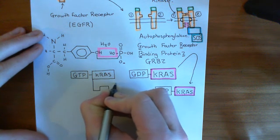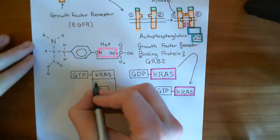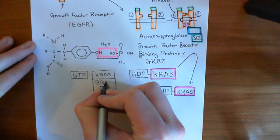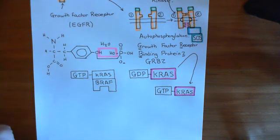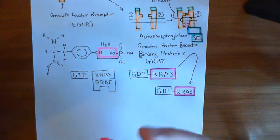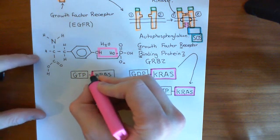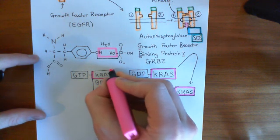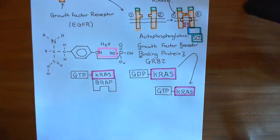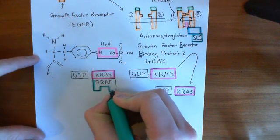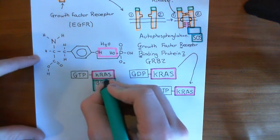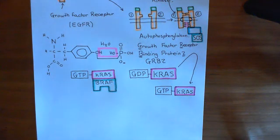BRAF is a kinase enzyme — not a tyrosine kinase, but a serine-threonine kinase. When we looked at this MAP kinase pathway in full generality, we just called this RAF kinase. Now, because we are talking specifically about KRAS, we're talking about a specific type of RAF protein. BRAF is the specific RAF protein which is activated by KRAS. So KRAS, in its ON state, binds to BRAF, and BRAF now becomes active.